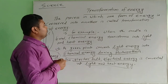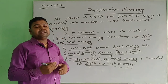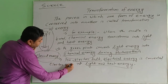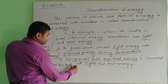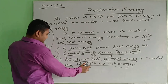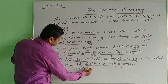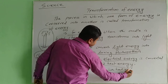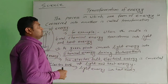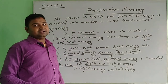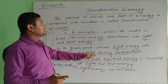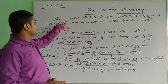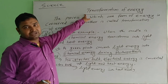In the transformation of energy, when the energy transfers its form — for example in an electric bulb — it converts into light and heat energy. Once again: what is the transformation of energy? It is the process of transforming from one form to another form, or one form of energy converted and conserved into another. That is called transformation of energy.